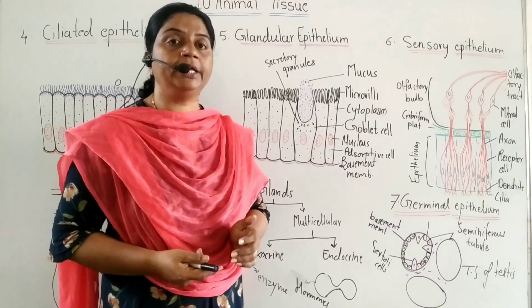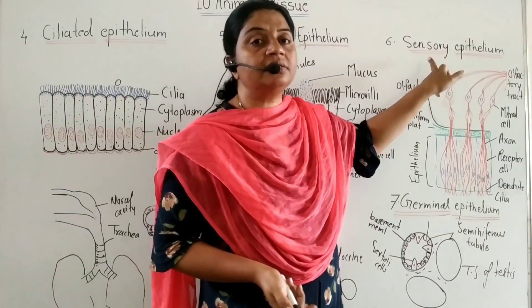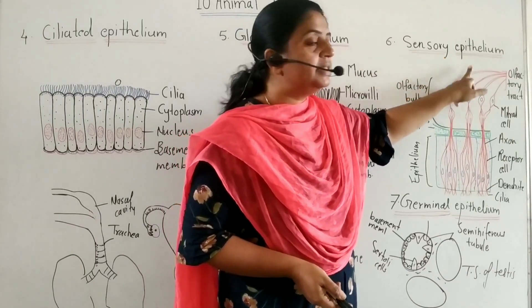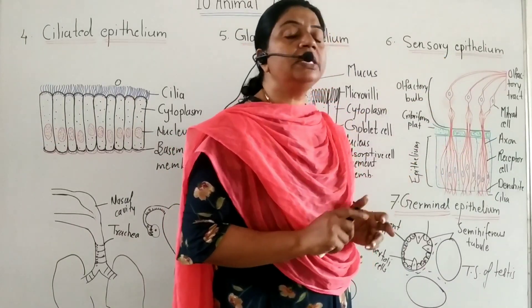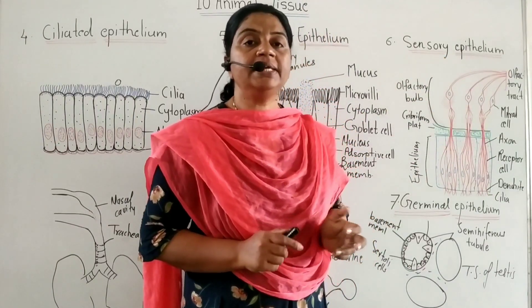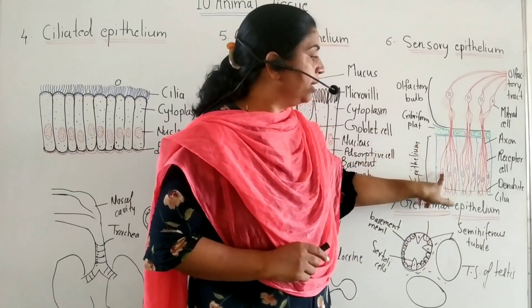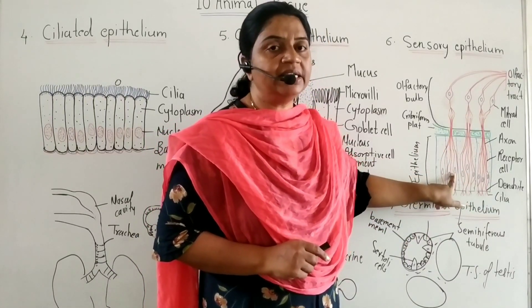The sixth type of simple epithelium is sensory epithelium. Sensory epithelium is made of modified columnar epithelium and neurosecretary cells.